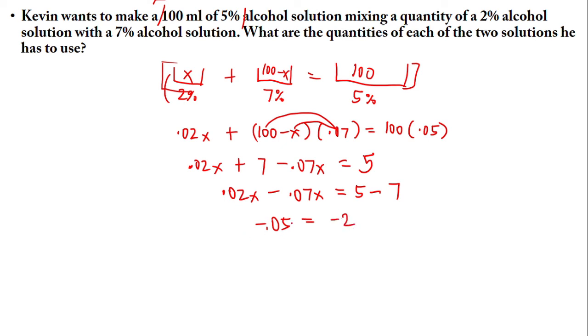Next, sorry I forgot my x there. Next we just have to divide both sides by negative 0.05. Negative 0.05 cancel cancel. Now we have x is equal to 40.